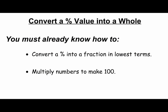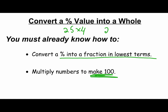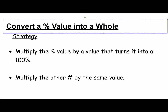We're going to be talking about how to convert a percentage value into a whole amount. To understand this lesson you must know two things: how to convert a percentage into a fraction in lowest terms, and how to multiply numbers to make 100. For example, 25 times 4 is 100, and 20 times 5 is 100.